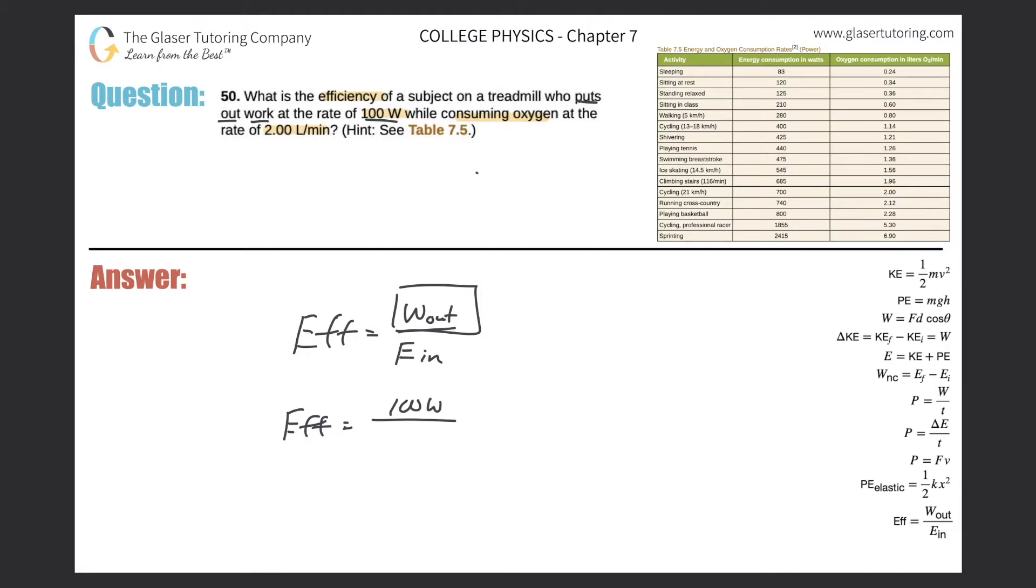Now, the thing is though, they give it to us in liters per minute, but we need to know it in terms of watts because I have to have the watts cancel nicely. The efficiency is a unitless number. So the bottom value here has to be in terms of watts if my numerator value is in terms of watts.